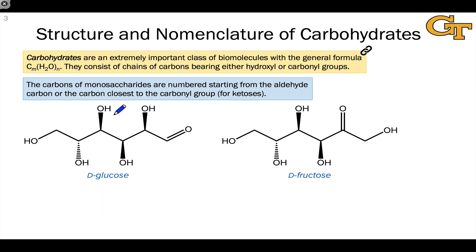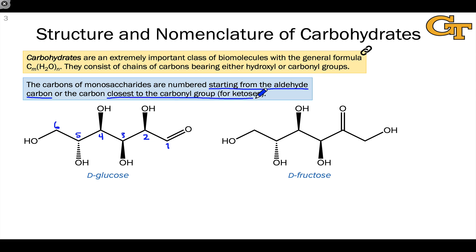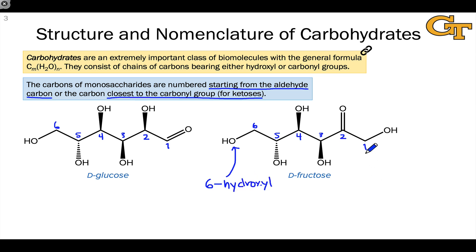The way we number monosaccharides is important, because these numbers show up in DNA — the 5' and 3' in a nucleic acid context are derived from this numbering scheme. In an aldose, we start at the aldehyde carbon as number one, then number remaining carbons in order: 2, 3, 4, etc., as in D-glucose. In a ketose, we start numbering at the carbon closest to the carbonyl group — here in D-fructose, carbon 1, 2, 3, 4, etc. We can also use these numbers to refer to specific hydroxyl groups. For example, the hydroxyl connected to carbon 6 is referred to as the 6-hydroxyl. The numbering scheme gives us language to talk about the structure and reactivity of carbohydrates, so it's worth committing to memory.